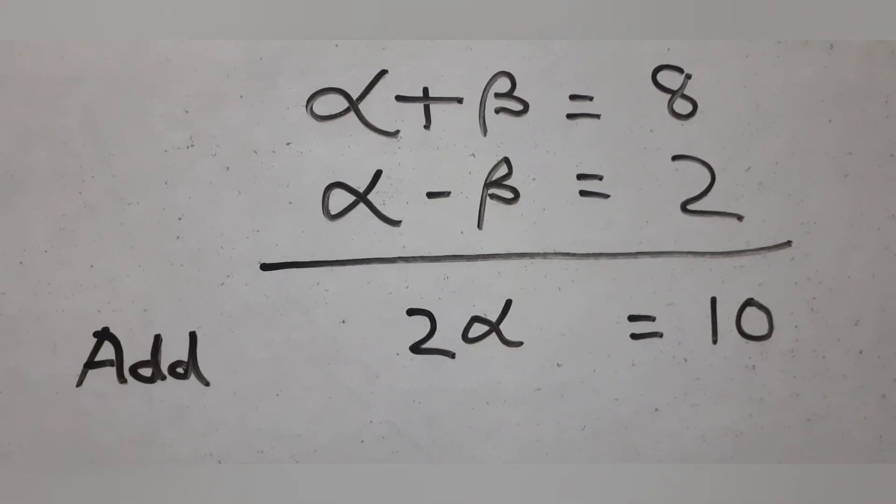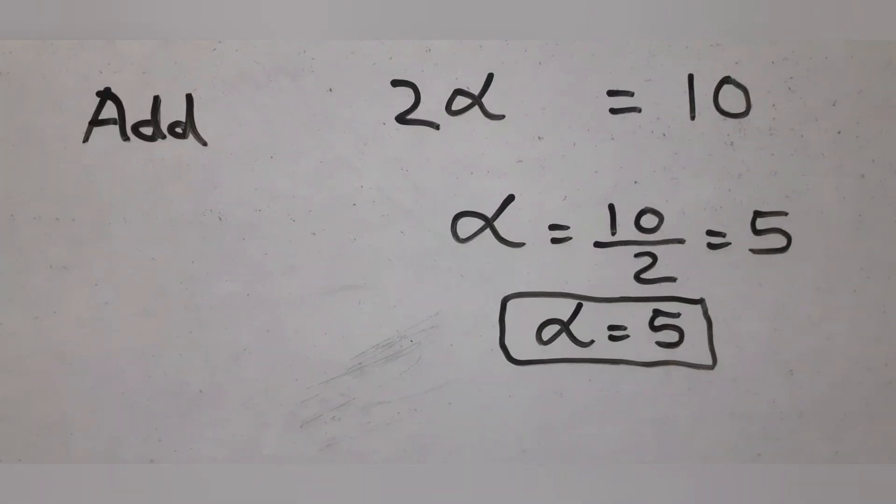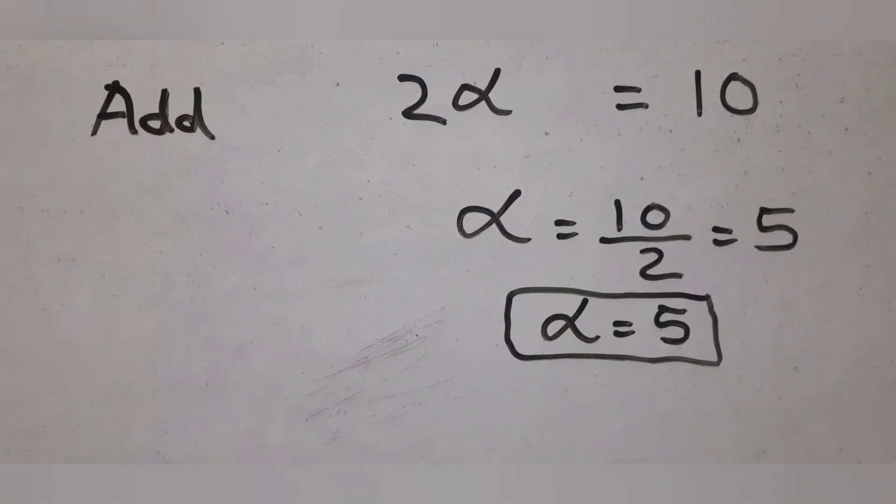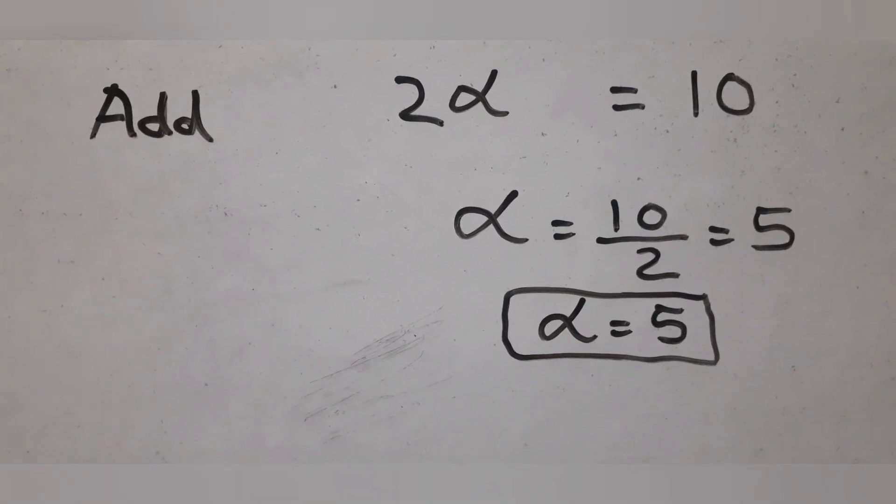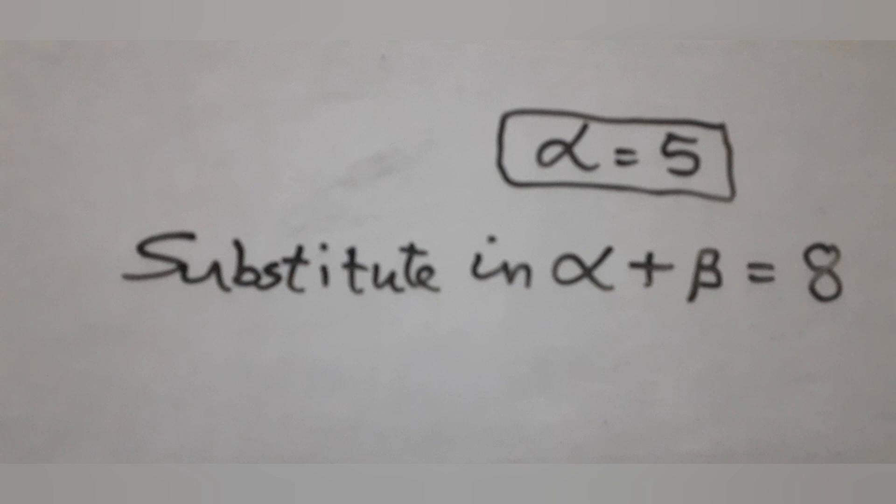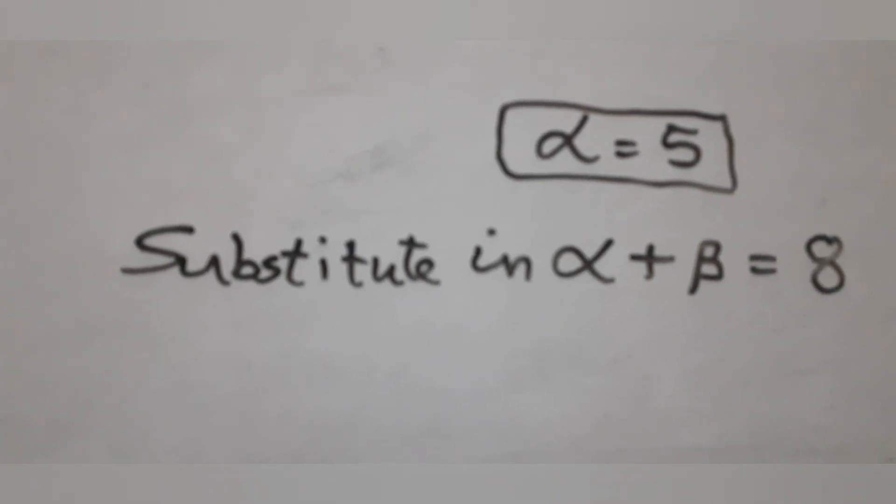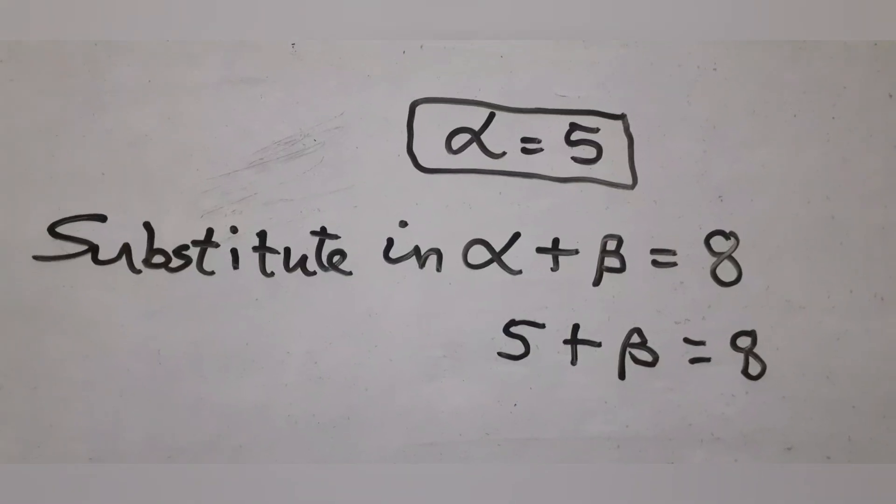Substitute in either of the equations to get beta. Substitute alpha equal to 5 in alpha plus beta equal to 8 to get beta equal to 8 minus 5, or beta equal to 3.